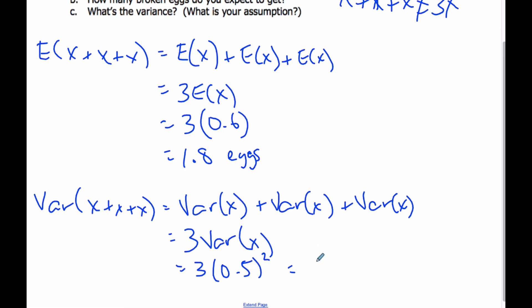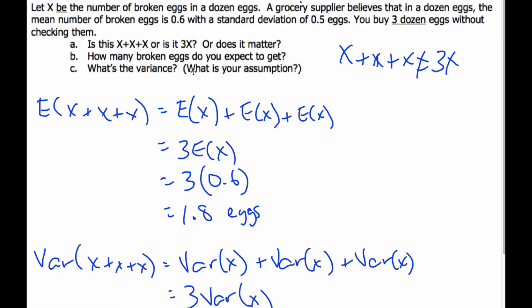So that'll be 0.75, I believe, is my variance of the three. Now, it has a little bit of an extra question here, it says, what's the assumption? Well, this statement here is true only if each dozen is independent.